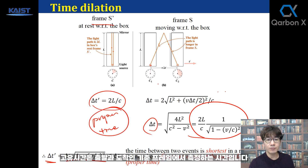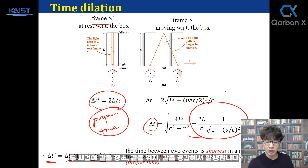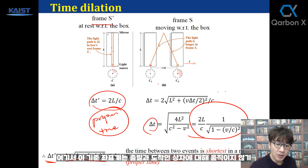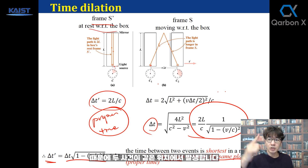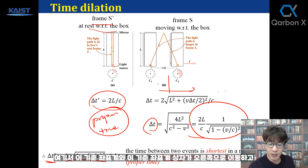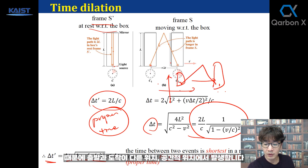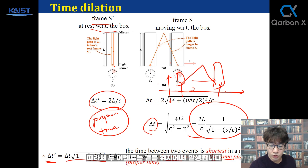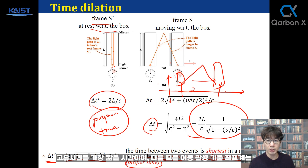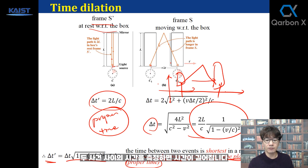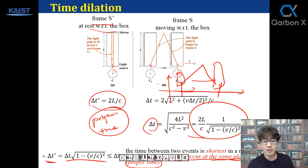Proper time is the time measured in the reference frame where the two events — departure and arrival — occur at the same spatial location. Because this reference frame doesn't move with respect to the box, the departure and arrival occur at the same position. In the other frame, the box is moving to the right, so departure and arrival occur at different spatial positions. When the two events occur at the same position, the time measured is proper time, which is the shortest time. In all other moving inertial reference frames, the time between the two events becomes longer — this is time dilation.